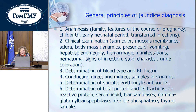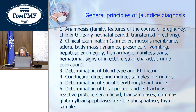General principles of jaundice diagnosis: The most important is the anamnesis — we must know about features of the pregnancy, childbirth, early neonatal period, transplacental infections, and so on. Clinical examination includes skin color, mucous membranes, body mass dynamics, and so on. Laboratory investigations include: determination of blood type and Rh factor; direct and indirect Coombs tests; determination of specific erythrocyte antibodies; determination of total protein and its fractions; C-reactive protein, ceruloplasmin, gamma-glutamyl transferase, alkaline phosphatase, and thymol test.